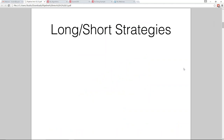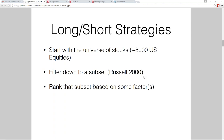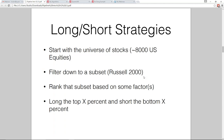When we think about long-short strategies, the framework is: start with the entire universe of stocks — about 8,000 U.S. equities on any given day — then filter down to some subset, maybe the Russell 2000, the S&P 500, or the Fortune 1000. Rank that subset based on some number of factors, long the top X percent, short the bottom X percent, and rebalance on some scheduled frequency. Today I'll walk through examples showing how to use the Pipeline API to build these types of strategies.